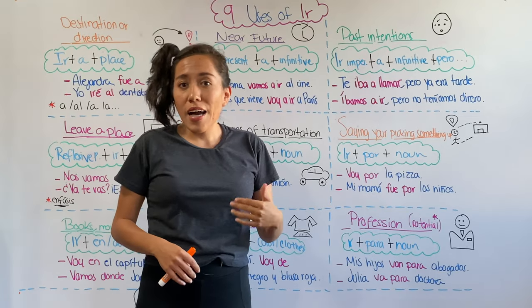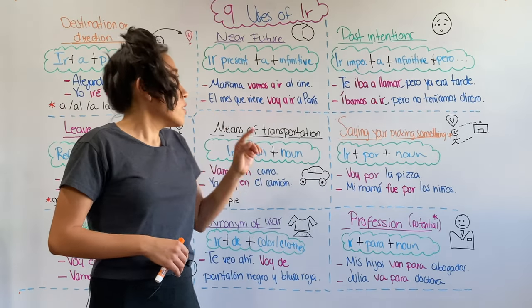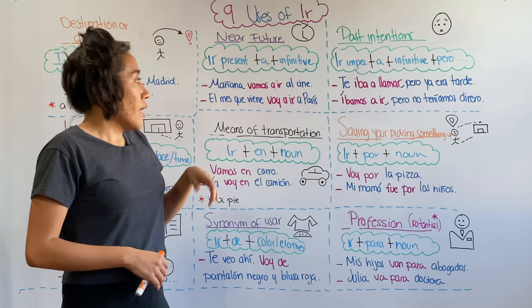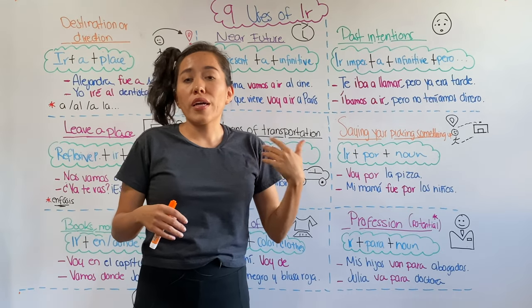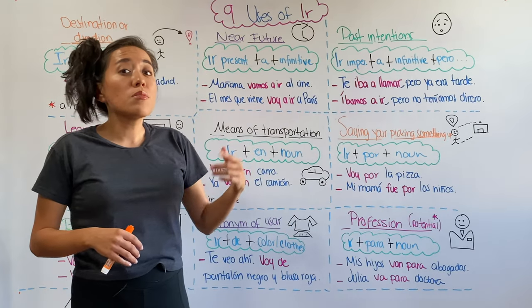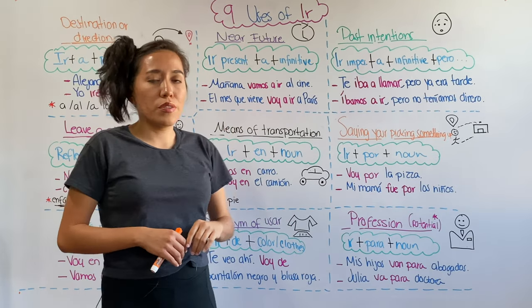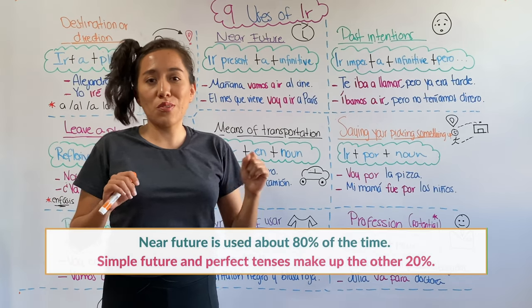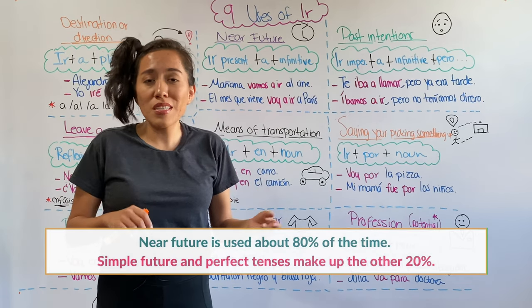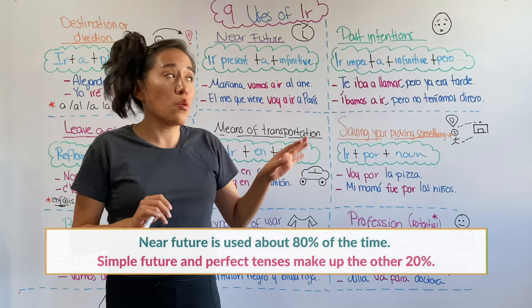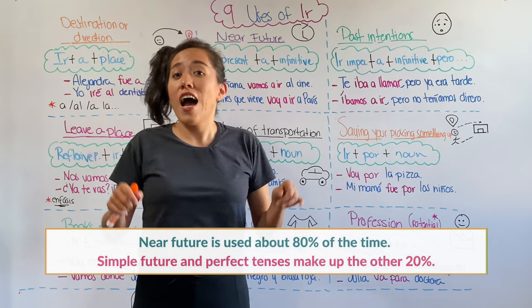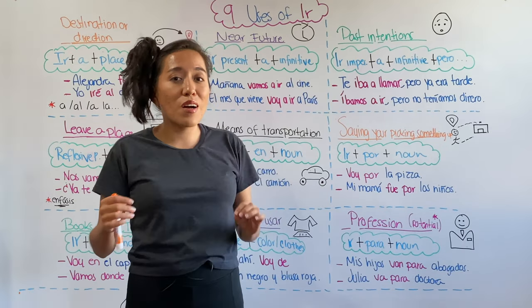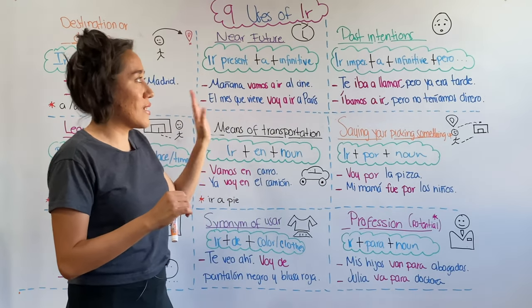For example, mañana vamos a ir al cine — tomorrow we're going to the movies. Or el mes que viene voy a ir a París — next month I'm going to go to Paris. There is fine print here, though: we use this 8 out of 10 times, but there are a few cases where you cannot use this tense. I'm going to leave you a video in the description so you learn when and how to use the near future tense in Spanish.